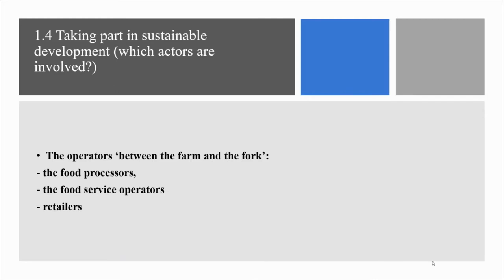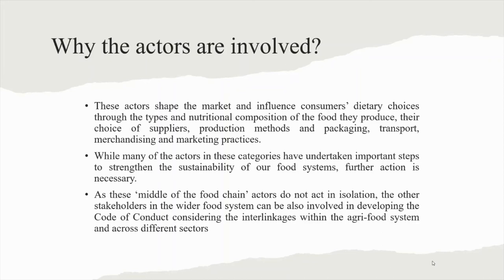Subchapter 1.4: Taking part in sustainable development. Which actors are involved? The operators between the farm and the fork are the food processors, the food service operators, and the retailers. The actors shape the market and influence consumers' dietary choices through the types and nutritional composition of the food they produce, their choice of suppliers, production methods, and packaging, transport, merchandising and marketing practices. While many of the actors in these categories have undertaken important steps to strengthen the sustainability of our food systems, further action is necessary. The other stakeholders in the wider food system can also be involved in developing the code of conduct, considering the interlinkages within the agri-food system and across different sectors.